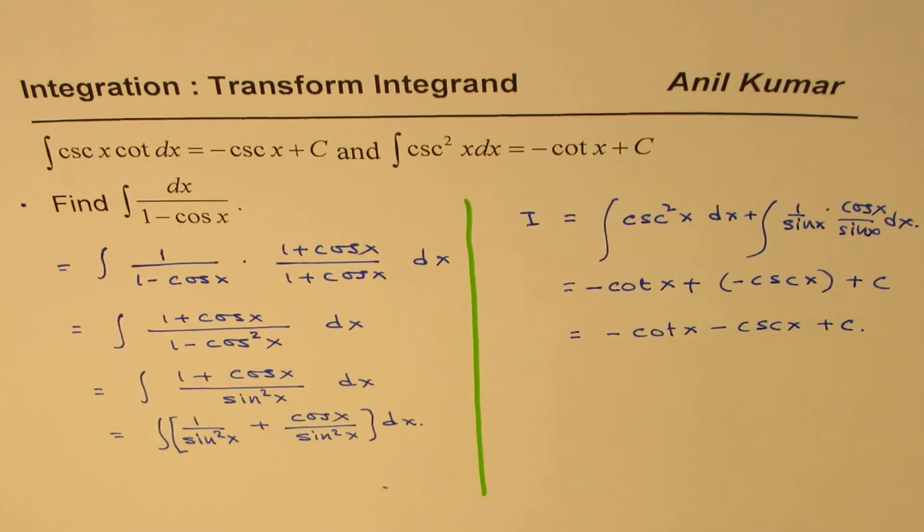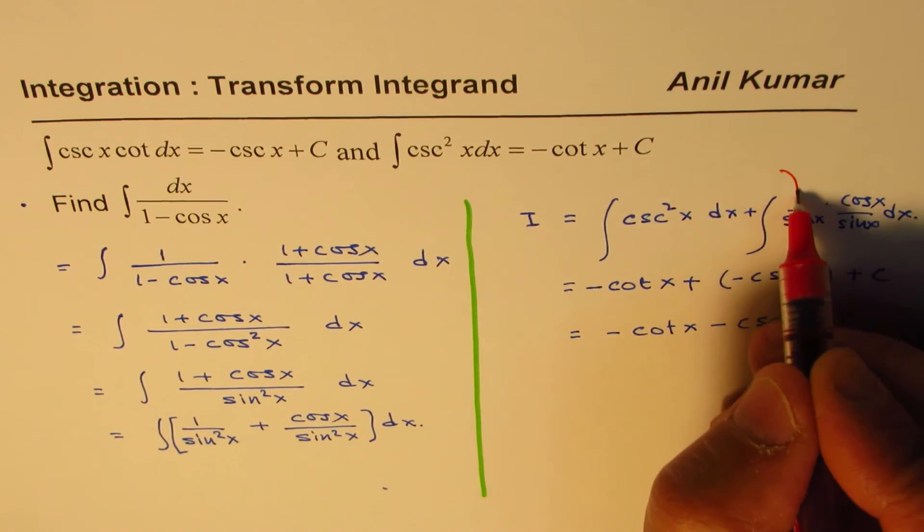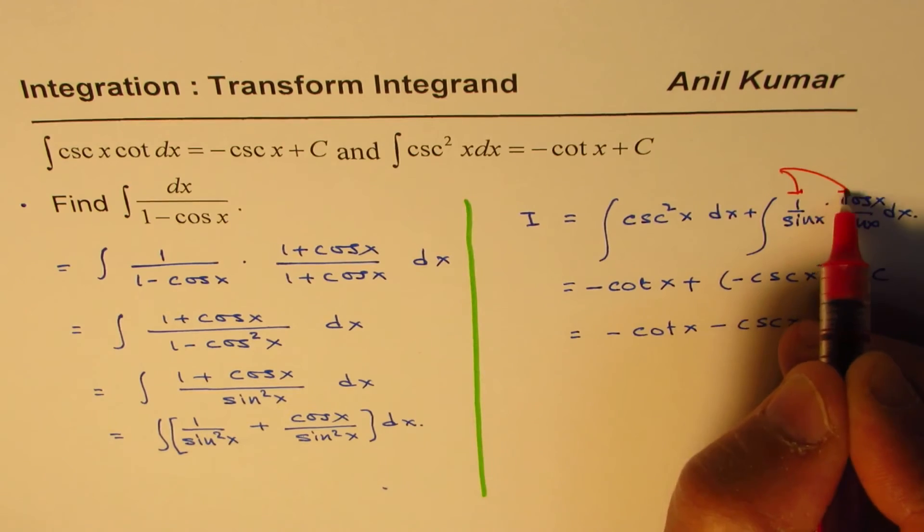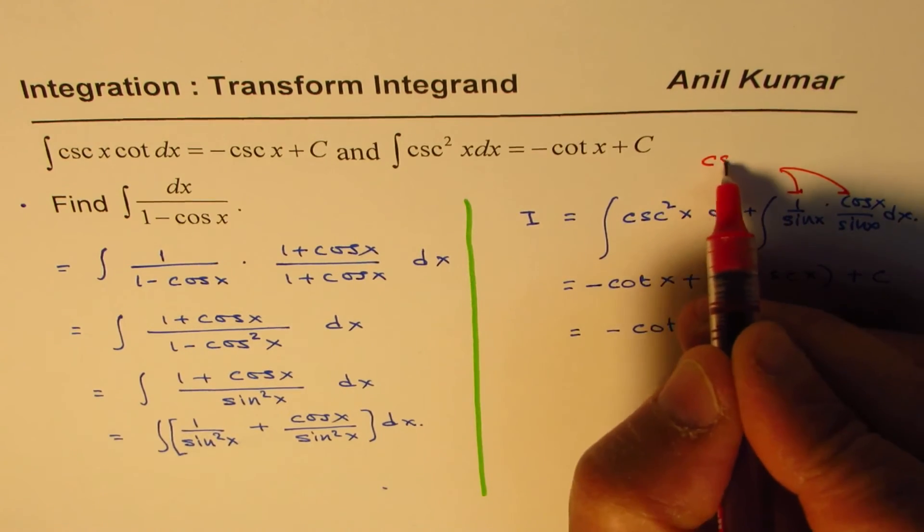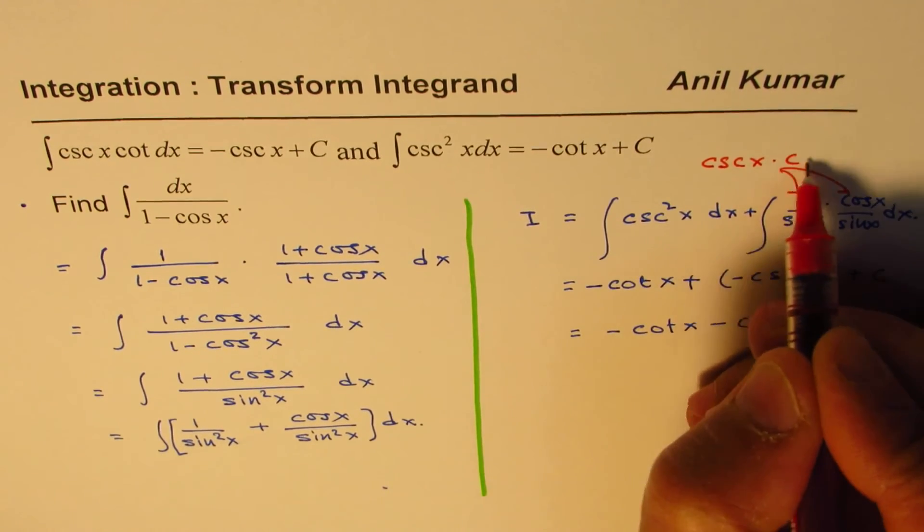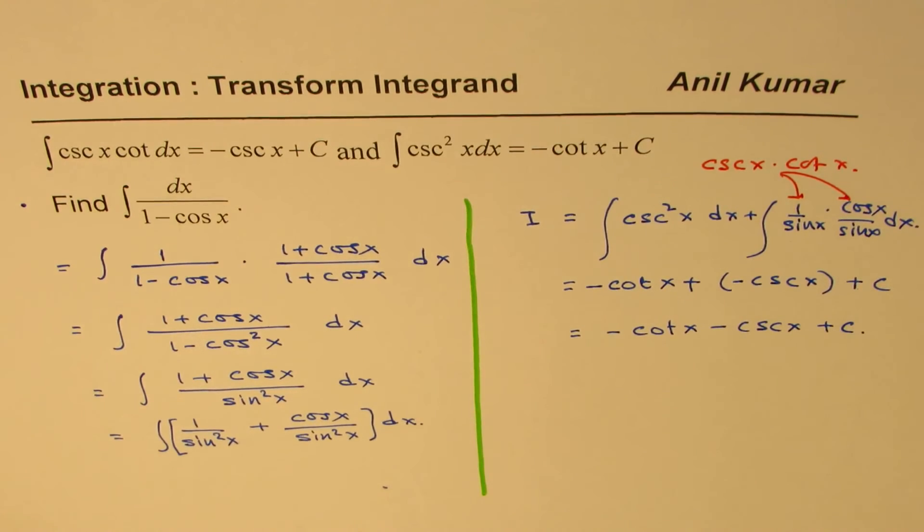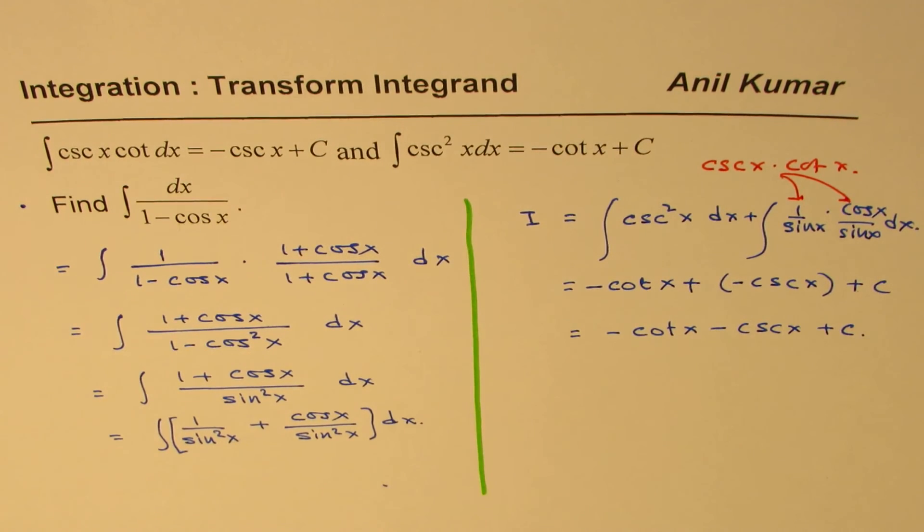So that is how you can actually find the solutions for such things. This is cosecant x times cot x. So I hope that helps. I'm Anil Kumar, you can always share and subscribe my videos. Thank you and all the best.